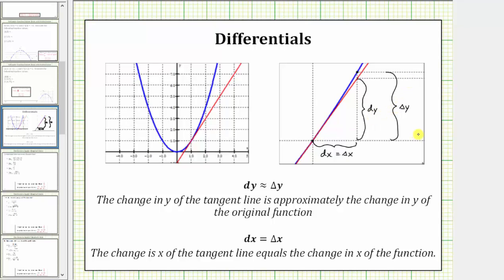Looking at the horizontal change from the first point to the second point, notice how differential x — the change of x along the tangent line — is equal to delta x, the change of x along the original function. Now let's go back and make our tangent line approximations.